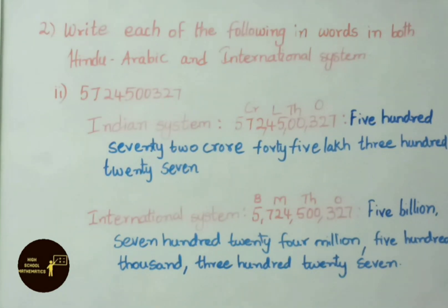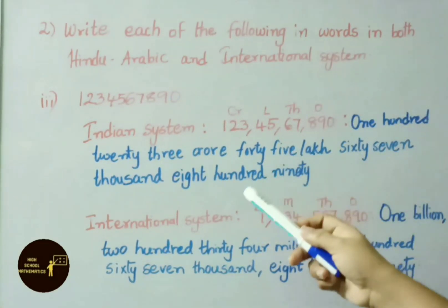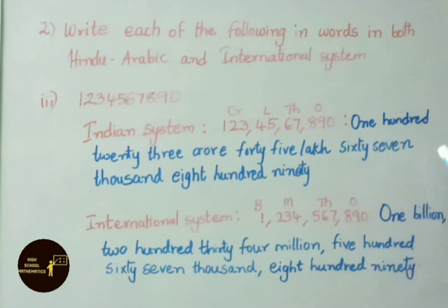We shall see the third part also now. We split the number by using commas and have written periods. Now let us read the number: 1,23,45,67,890. Now let us see the number in word form: one hundred twenty three crore forty five lakh sixty seven thousand eight hundred ninety.